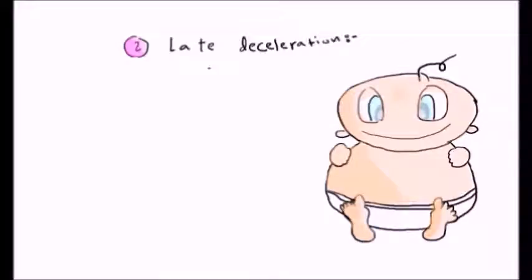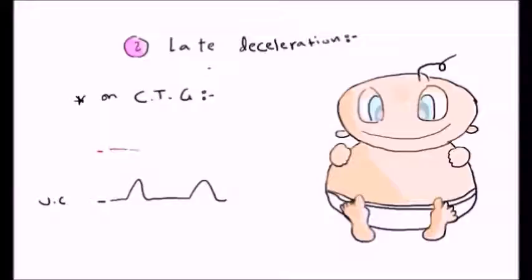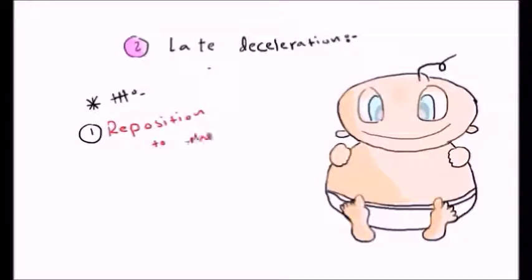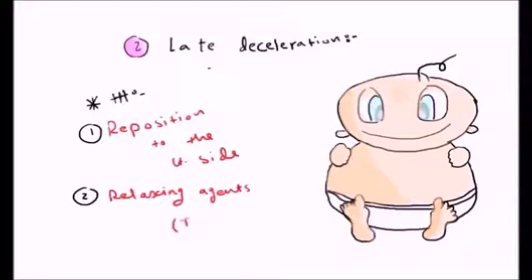On the CTG paper, you can see the uterine contractions and the fetal heart rate. The decelerations occur after the uterine contractions — this is why they are called late decelerations. For management: if you find a late deceleration, you should reposition the patient to the left side, give a relaxing agent like terbutaline because forceful uterine contractions are a cause, and if it progresses you should perform a caesarean section.